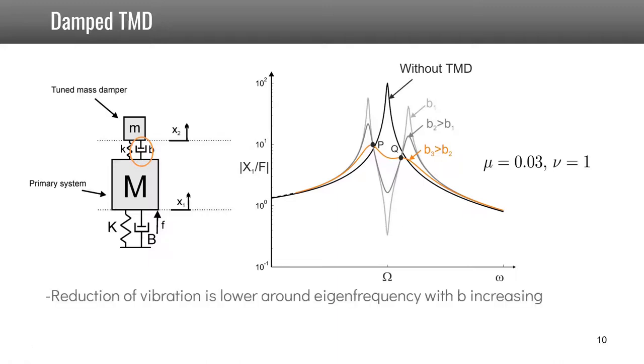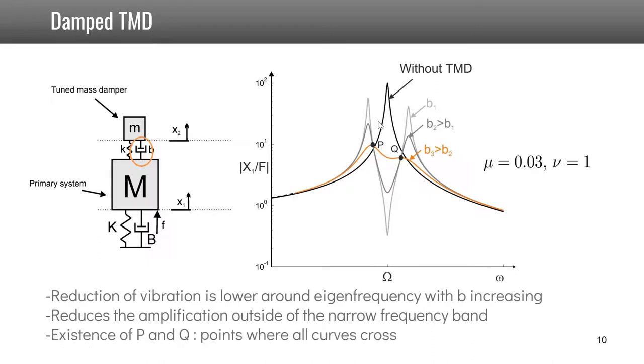Note that the reduction of the vibration at the natural frequency is lower when B is increasing, but at the same time the amplification outside this very narrow frequency band is reduced. Note also the existence of two points that we will call P and Q, where all the curves with different values of damping cross.